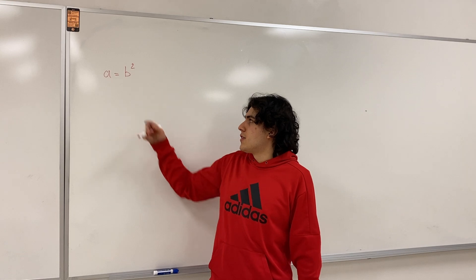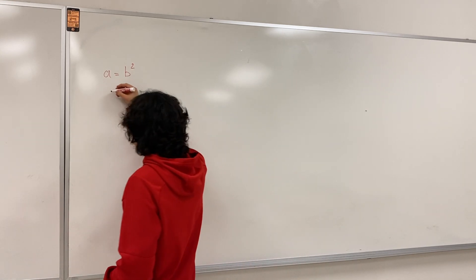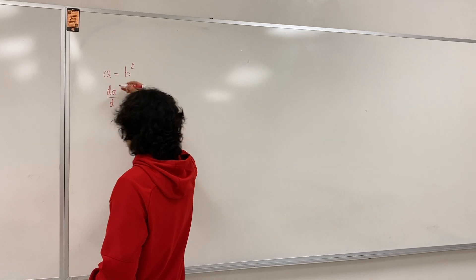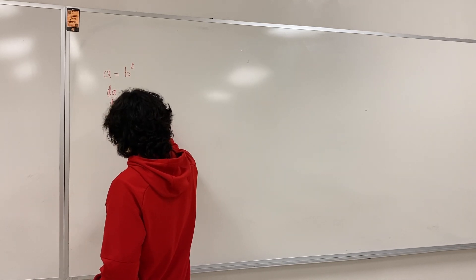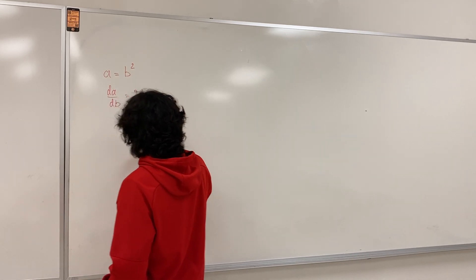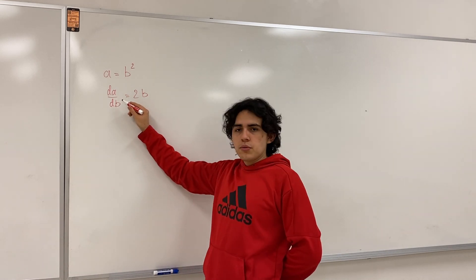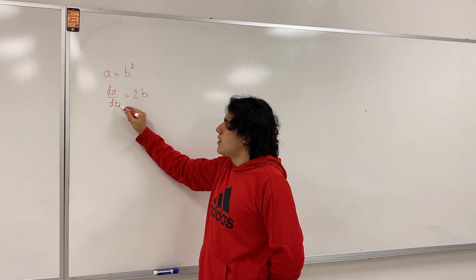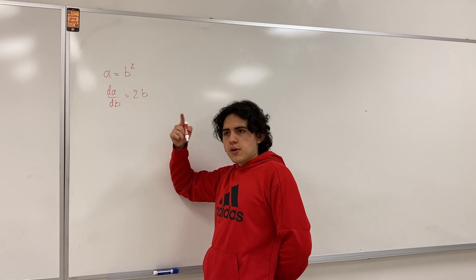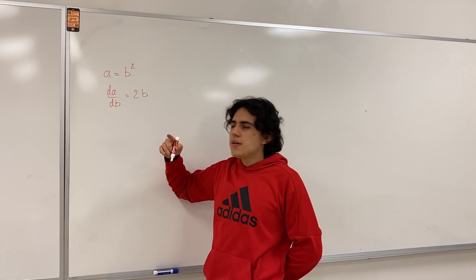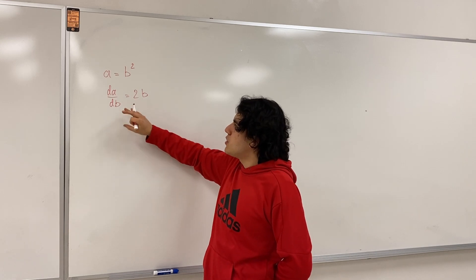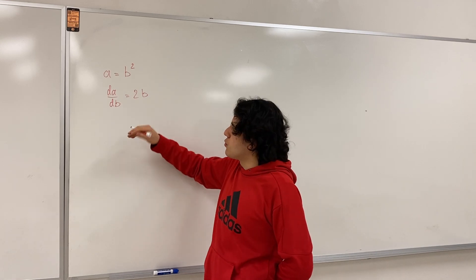So here, for instance, I could do da/db, and that is going to give me the derivative of a with respect to b, which is 2b. Most people would think: we're saying that a is a function of b, and if you pick a b value you're going to get an a value. That's right. But could we treat differentials like this — can we find the derivative of b with respect to a?